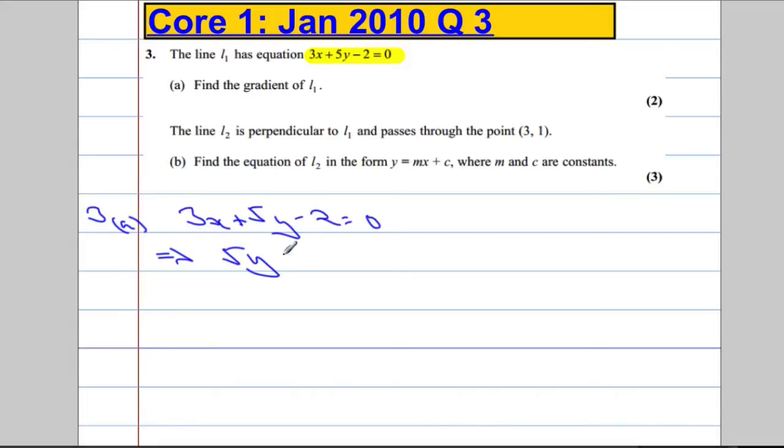So that means 5y is going to equal negative 3x plus 2. And then divide across by 5, so y is going to equal negative 3 over 5x plus 2 over 5.